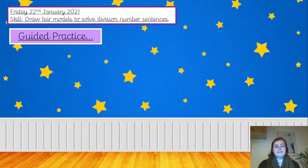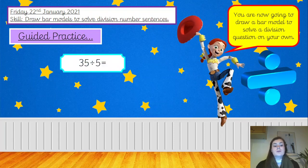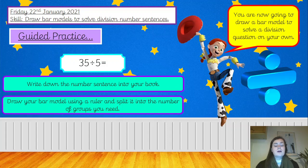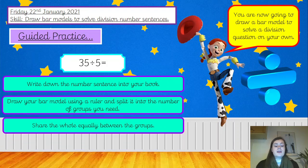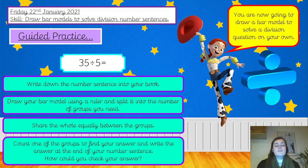Guided practice time. You are now going to draw a bar model to solve a division question on your own. Your number sentence is 35 divided by 5 equals. Write the number sentence into your book, draw the bar model using a ruler and split the bottom bar into the correct number of groups. Share the whole number equally between the groups, count one of the groups to find your answer, write the answer at the end of your number sentence, and check your answer before you press play again. Pause the video, off you go.